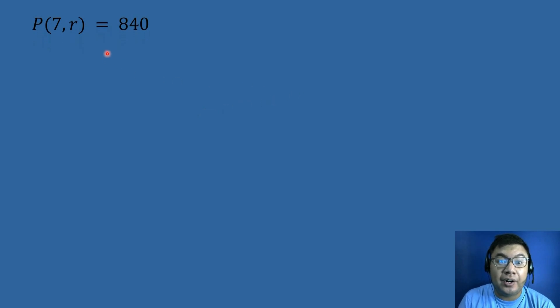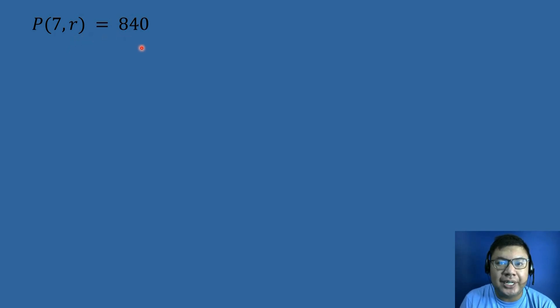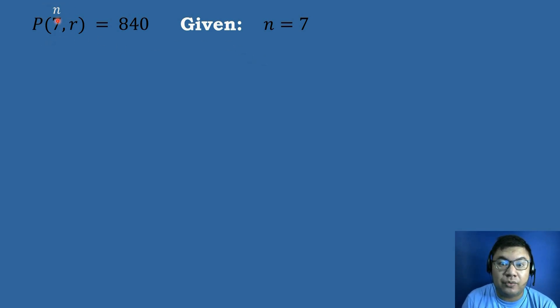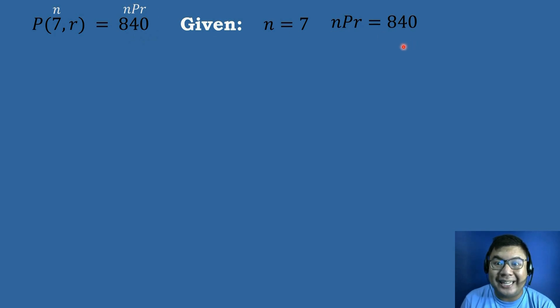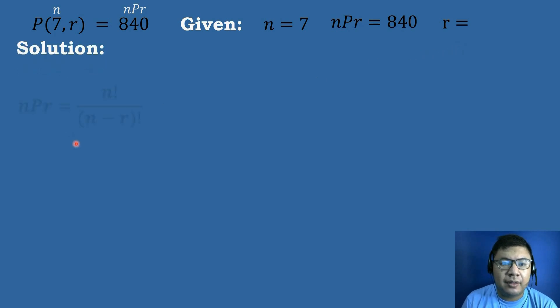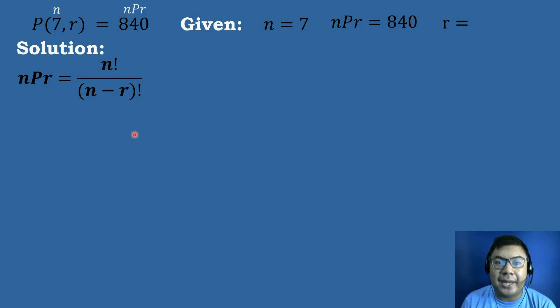On our first example we solved for the value of permutations. This time, let's find the value of R. We have given the permutation of 7 objects taken R at a time, which is equal to 840. The number of objects N is equal to 7, and the number of permutations is equal to 840. We will find the value of R using the formula: NPR equals N factorial over the quantity N minus R factorial.